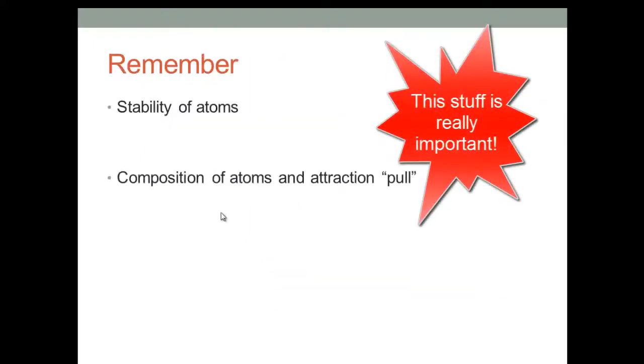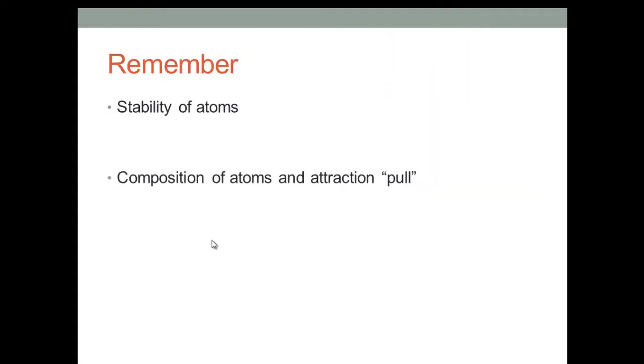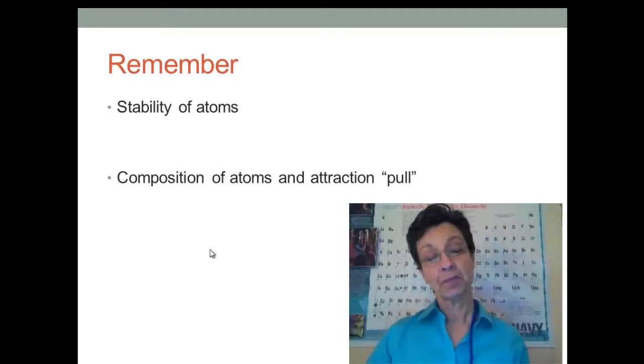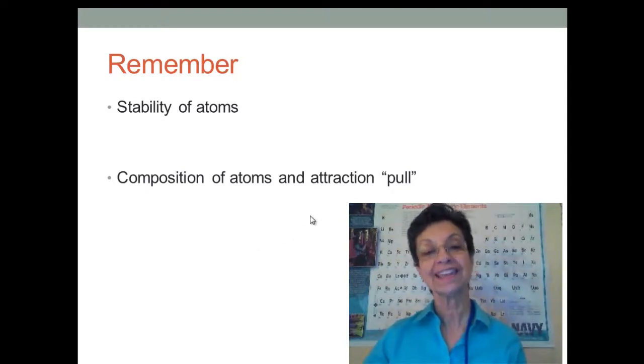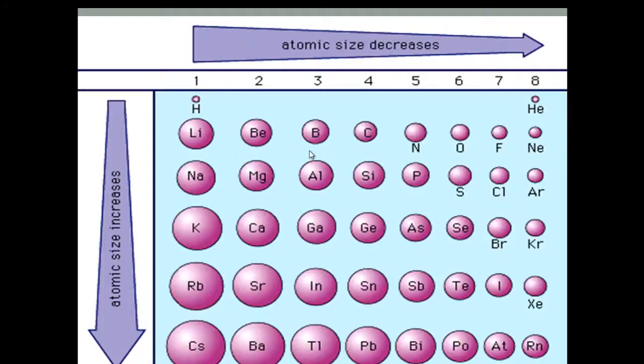It is important to remember a couple of things regarding atoms. Atoms are most stable when they have a full array of valence electrons. The other thing to remember, atoms have a positively charged nucleus. That is, it has protons in the nucleus and electrons around it. Therefore, there is a pull. There's an attractive force between the protons and the electrons.